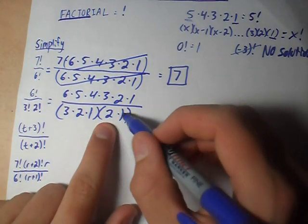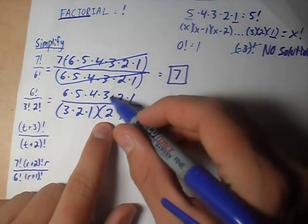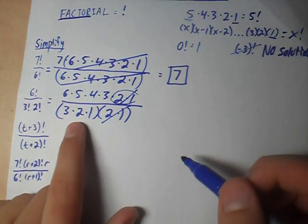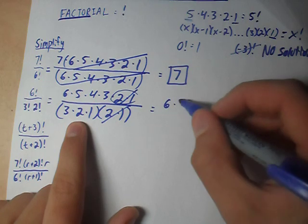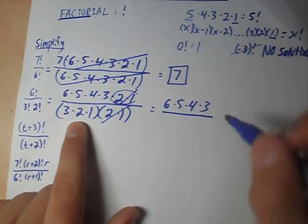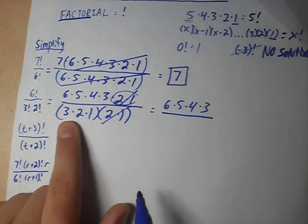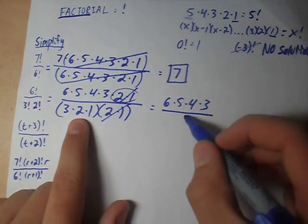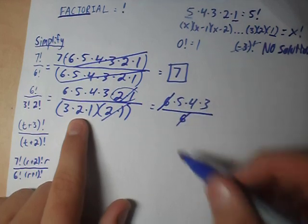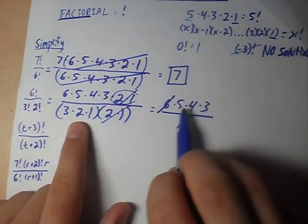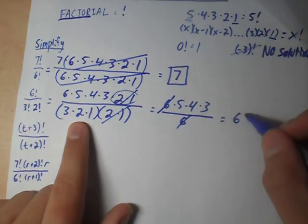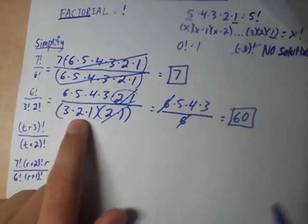We've got 2 times 1 on the top and 2 times 1 on the bottom, so we can cancel those out. We're left with 6 times 5 times 4 times 3, and 3 times 2 times 1 is 6. So we can express the 6 and cancel it out. What we're left with is 5 times 4 times 3, which is 3 times 20, so our answer is 60.